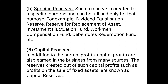The another main type of reserve is capital reserve, which is just the opposite of revenue reserve. Capital reserve is basically the reserve which is made out of capital profit. In addition to normal profits, capital profits are also earned in the business from many sources. These are profits not related to day-to-day business activities — these are by-chance profits. The reserves created out of such capital profits, such as profits on the sale of fixed assets, are known as capital reserve.